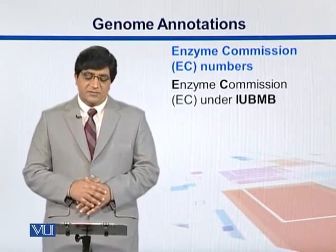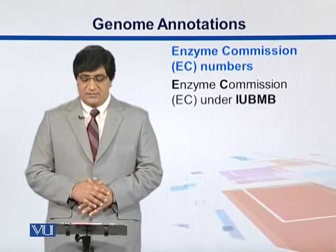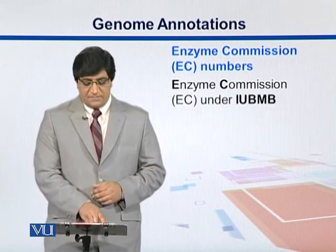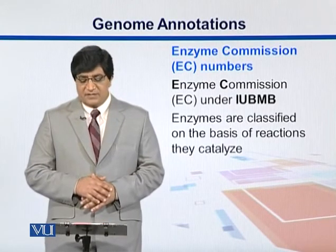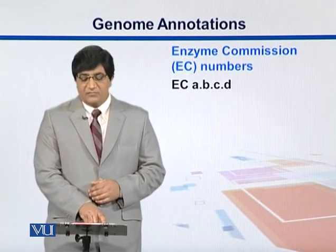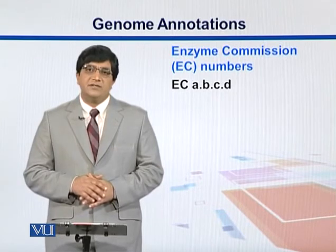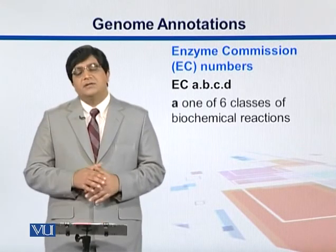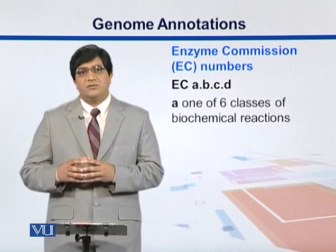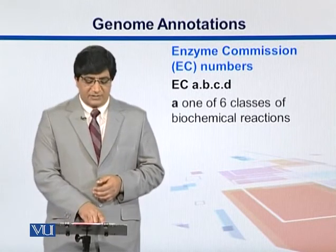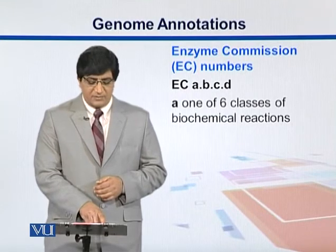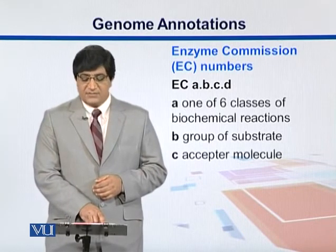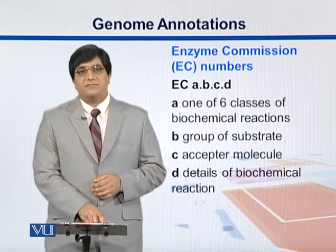Another scheme is Enzyme Commission numbers, or EC numbers, put forward by the Enzyme Commission working under IUBMB — the International Union for Biochemistry and Molecular Biology. Enzymes are classified on the basis of the reactions they catalyze using a four-digit scheme. The first digit (A) tells us which of the six classes of biochemical reactions the enzyme belongs to. The second digit (B) is the group of substrate it acts on. C tells us about the acceptor molecule, and D gives the detail of the biochemical reaction.